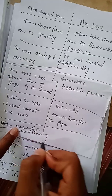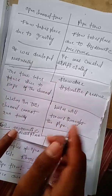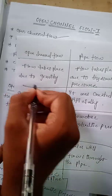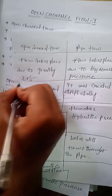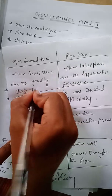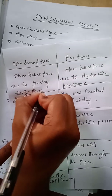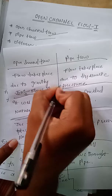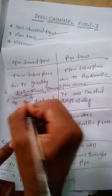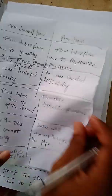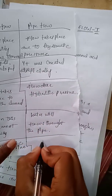This is the main difference between open channel flow and pipe flow. The examples of open channel flow, as already discussed, are rivers, streams, and lakes.